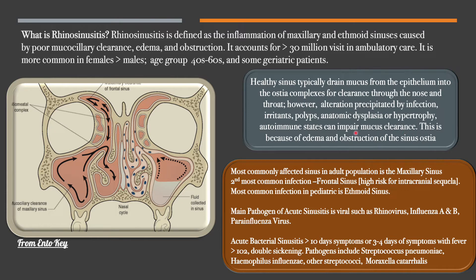This impairment is because of edema and obstruction of the sinus ostia. The most commonly affected sinus in the adult population is the maxillary sinus. The second most common is the frontal sinus, which carries a high risk of intracranial spread. The most common infection in pediatrics is the ethmoid sinus.